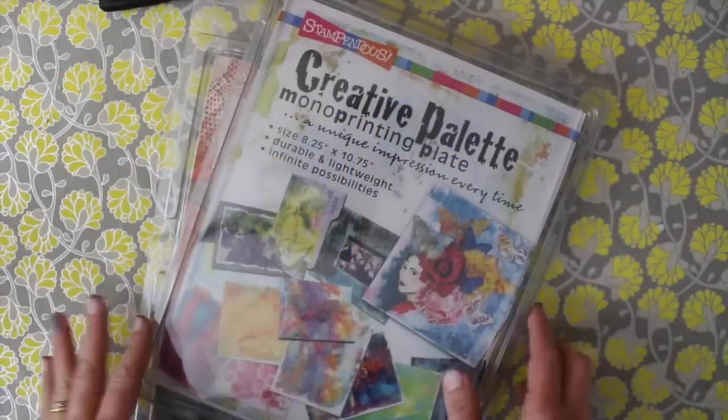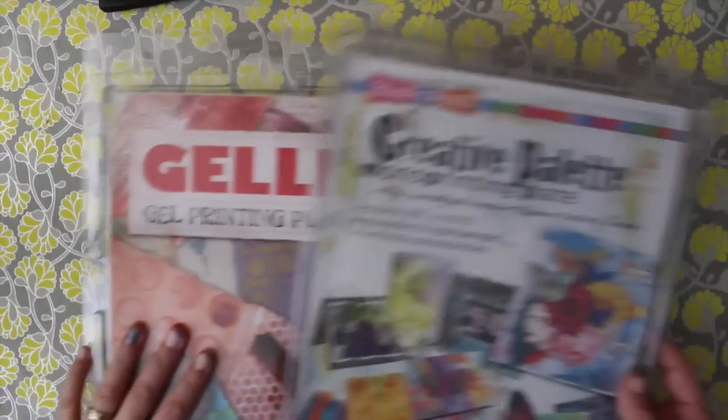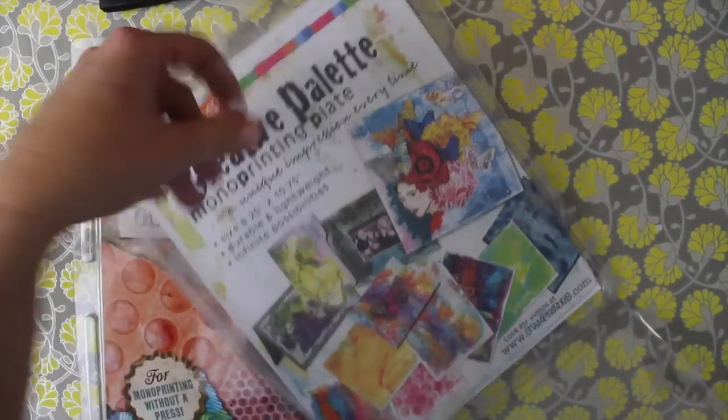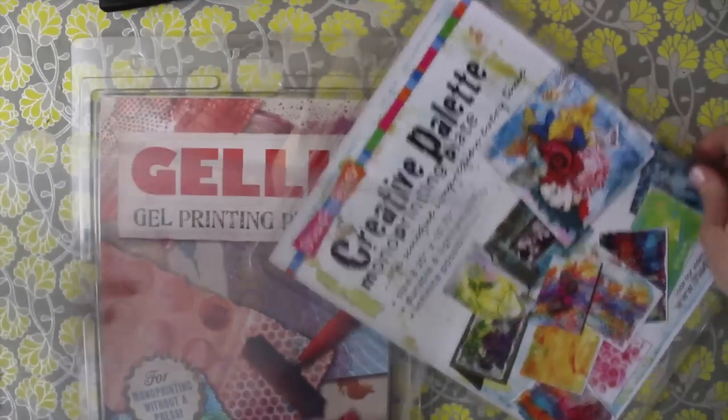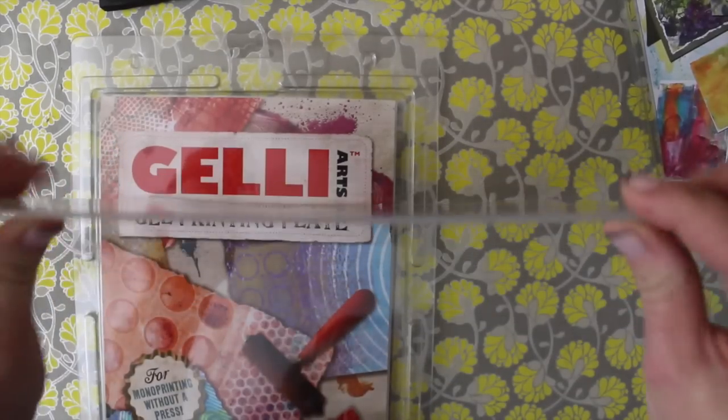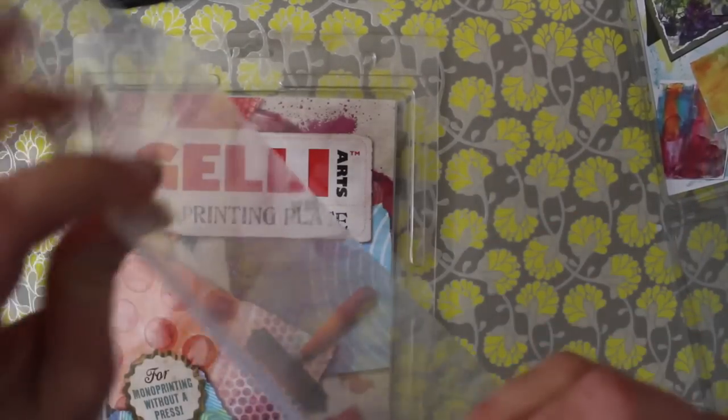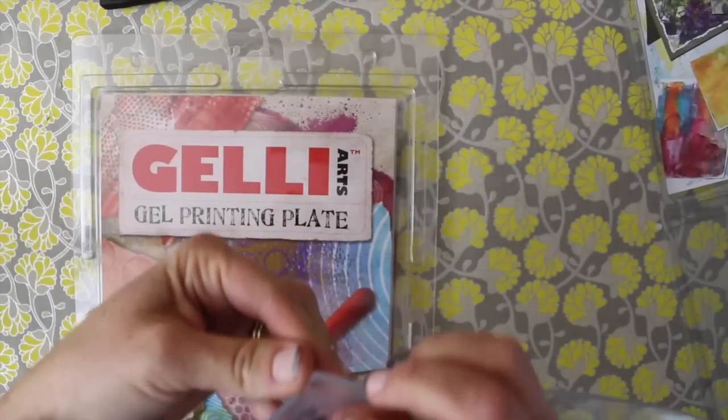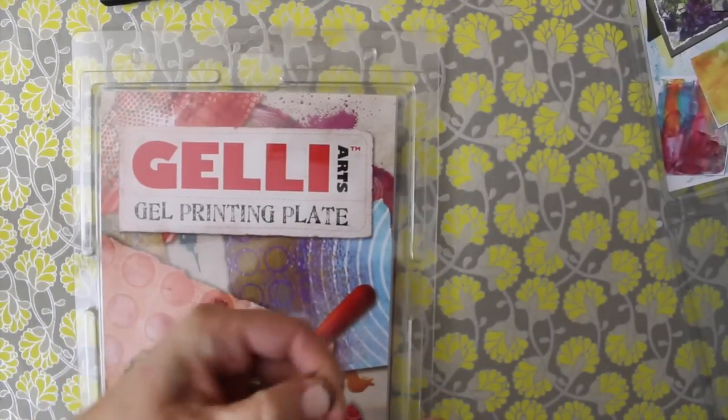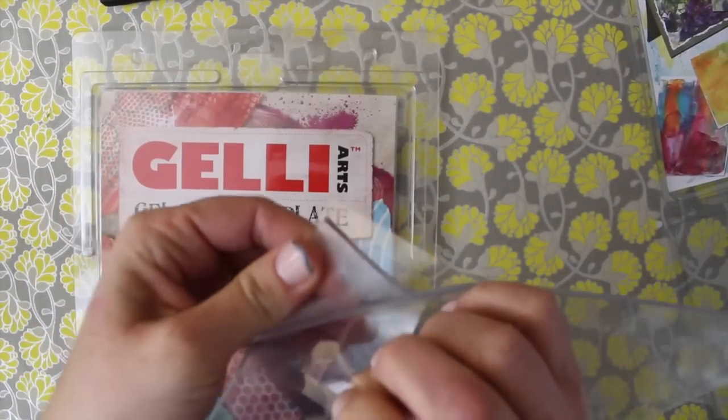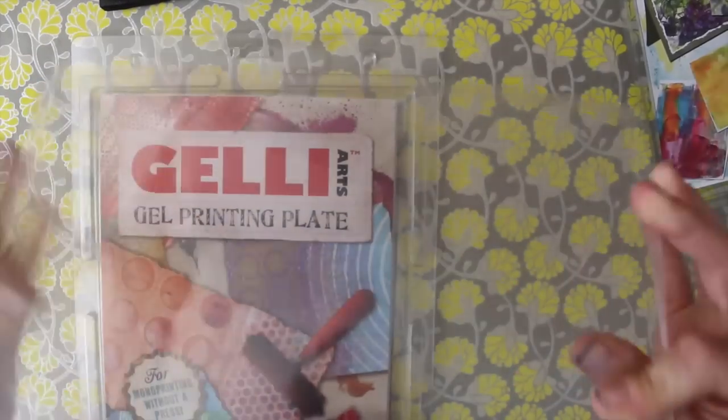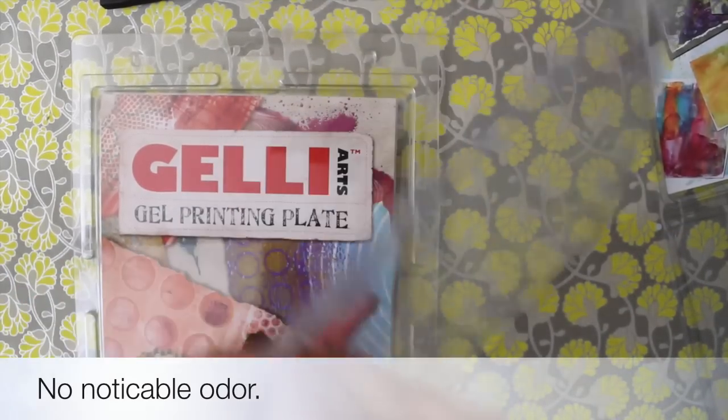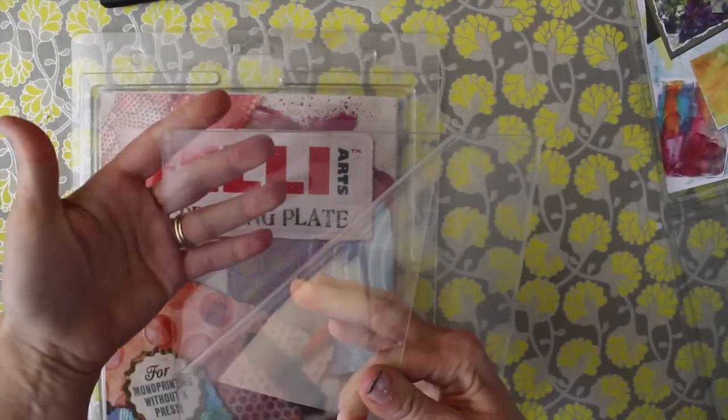Okay we're gonna take a quick look at the two different products before we even get started and they get really super messy. So I try to get similar sizes and the Creative Plate looks to be maybe about 3/16ths of an inch thick. It's got some kind of plastic cover sheet on both sides and it's crystal clear. This is an 8 and a half by 10 and 3/4 and it's lightweight.